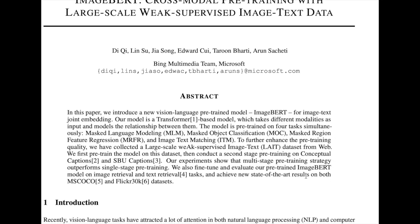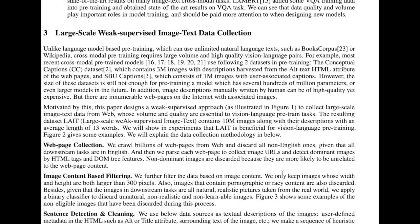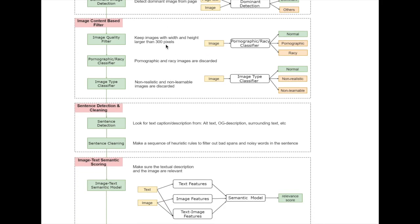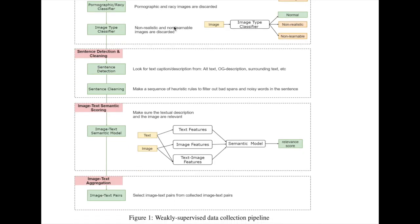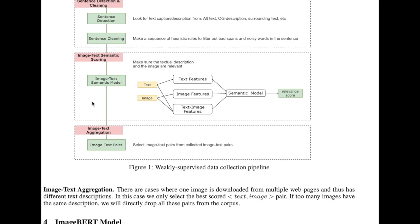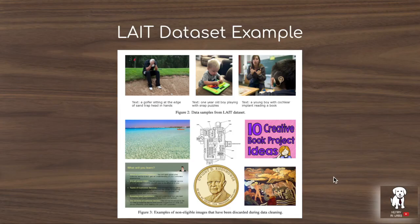Another key contribution of this paper is the construction of a large-scale weakly supervised image-text dataset — the LAITE dataset — containing 10 million image-text pairs. They crawl web pages, extract potential image-text pairs, and filter them based on size, offensive content, and miscellaneous image characteristics. They then apply text-image relevance scoring to ensure quality pairings. The paper is not fully specific about how the dominant image detection or the image type classifier works in the pipeline, but the overall process filters the raw web-scraped data down to this 10 million pair dataset.